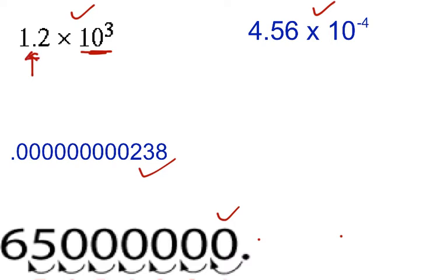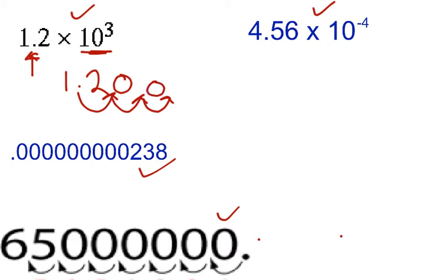We have 1.2, and we're going to move it three places to the right: 1, 2, 3. You fill these spaces in with zeros. So our final answer will be 1, 2, 0, 0 — or 1,200. And you're done.